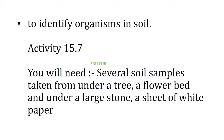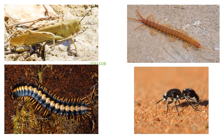The next topic is soil organisms. Here we have to do an activity to identify organisms in soil. You will need several soil samples taken from under a tree, a flower bed, and under a large stone, as well as a sheet of white paper. First, spread each soil sample on the sheet of white paper.